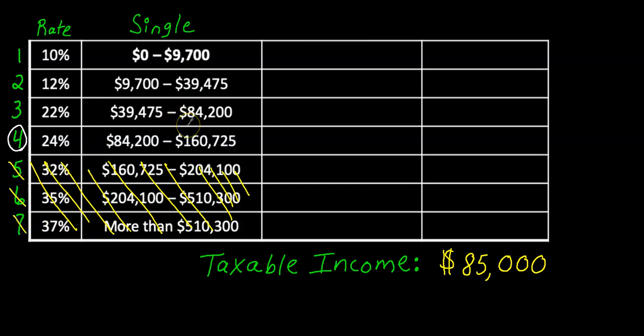Now here's a common mistake people make. Once they've identified row four they say to themselves okay it's a 24% rate so I owe 24% on this whole amount. So they take 0.24 times $85,000. That's not how it works.